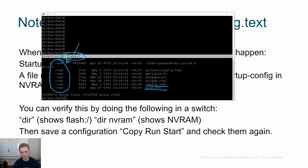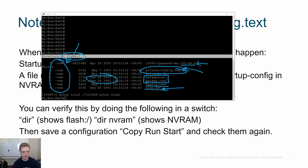You'll see there's a VLAN.dat, which we'll talk about when we get to VLANs. I actually have two different backup configs here. There's also a backup I called private config. And here we have our IOS image — you'll notice this is a relatively old IOS image on this switch.